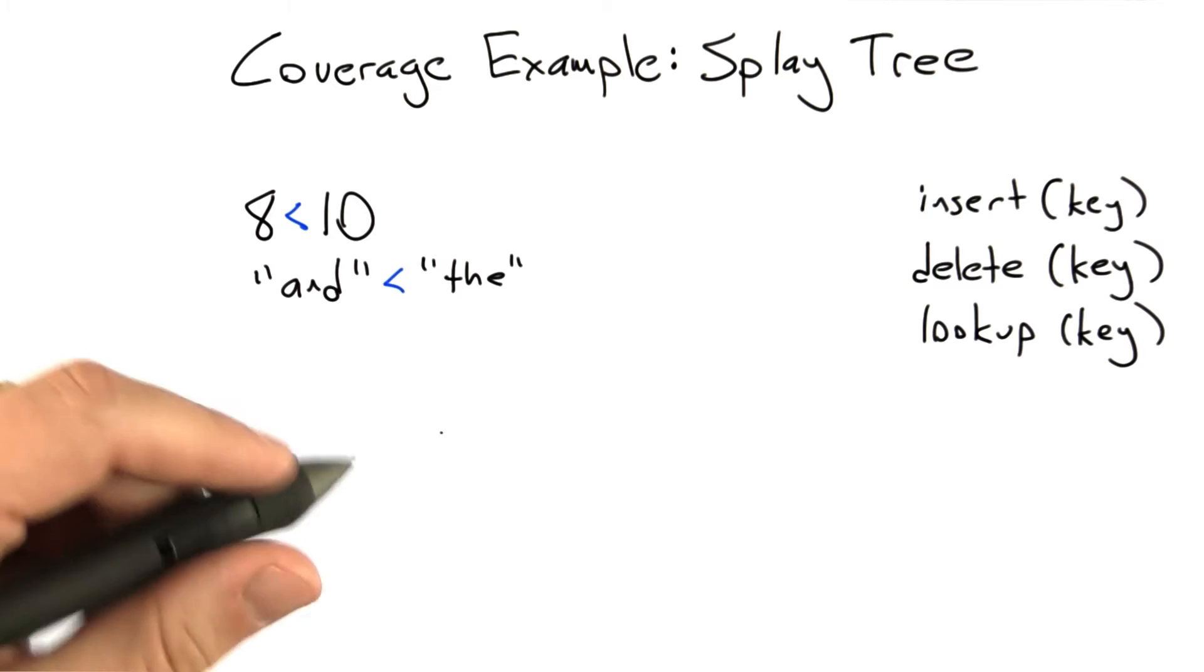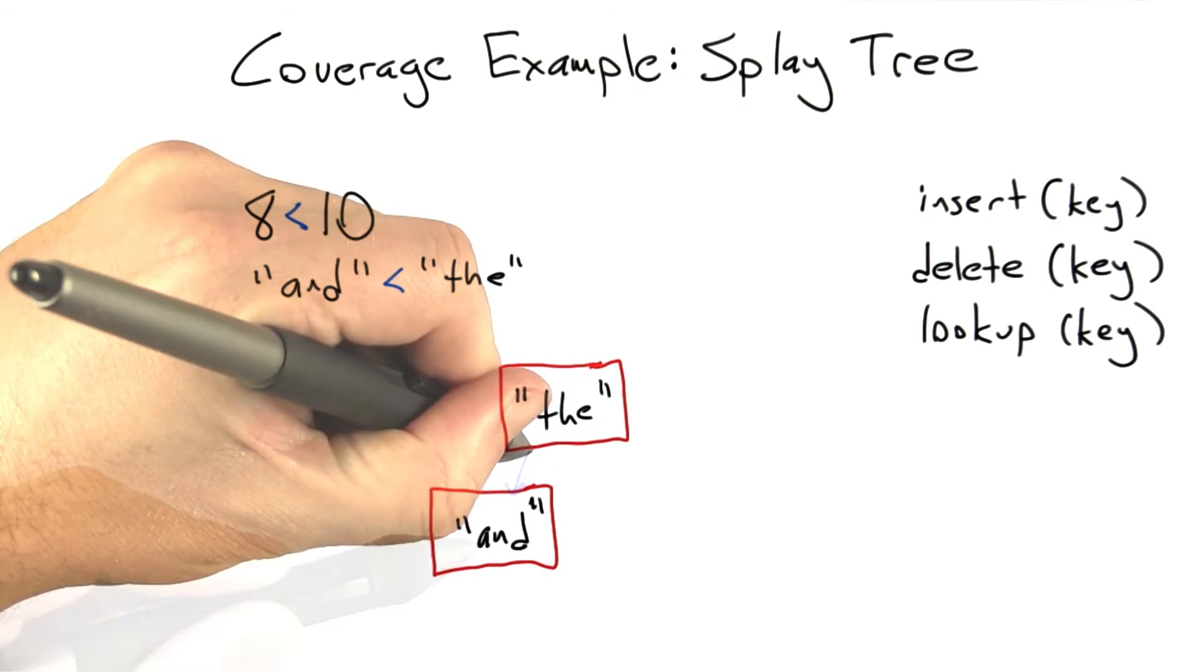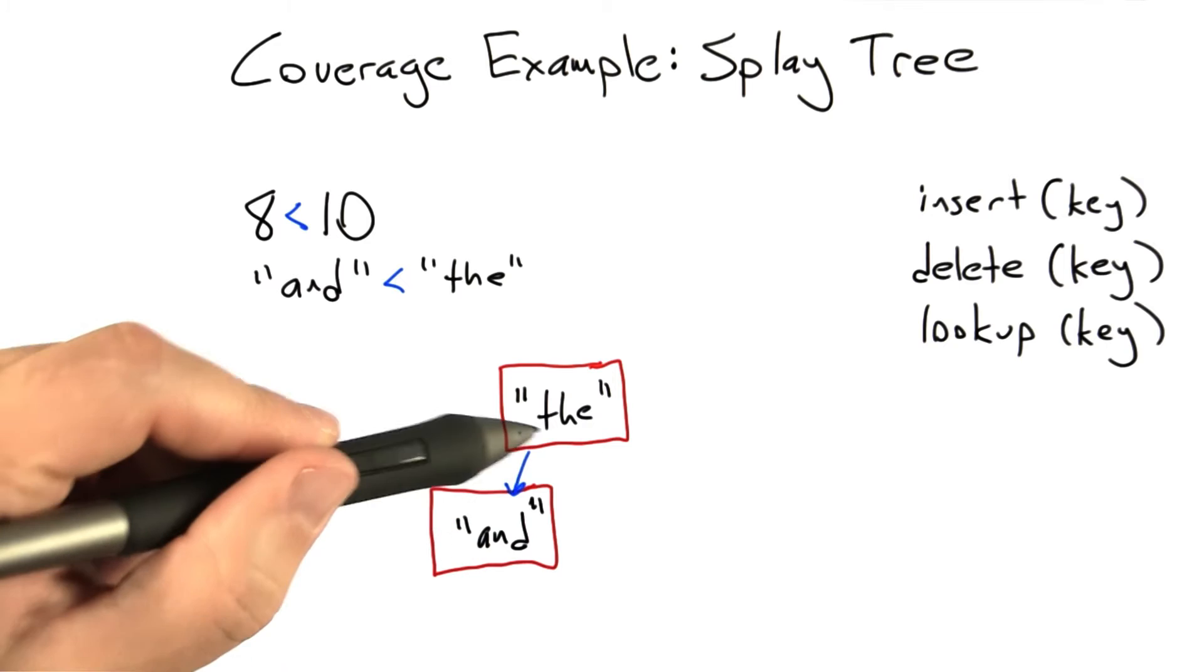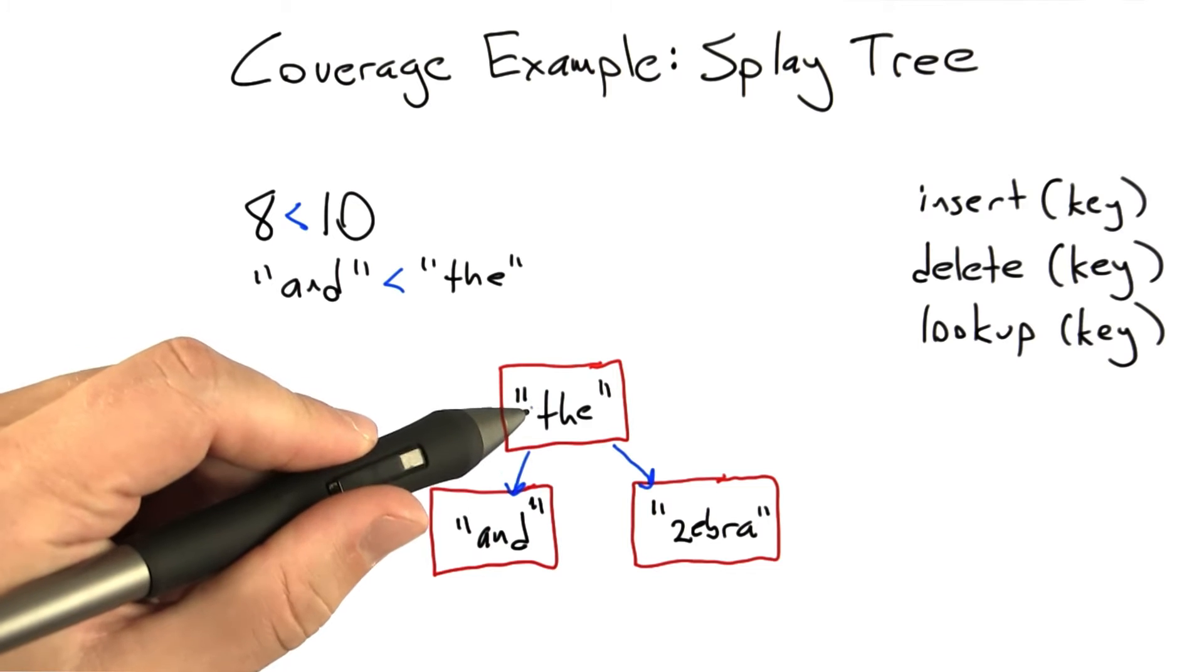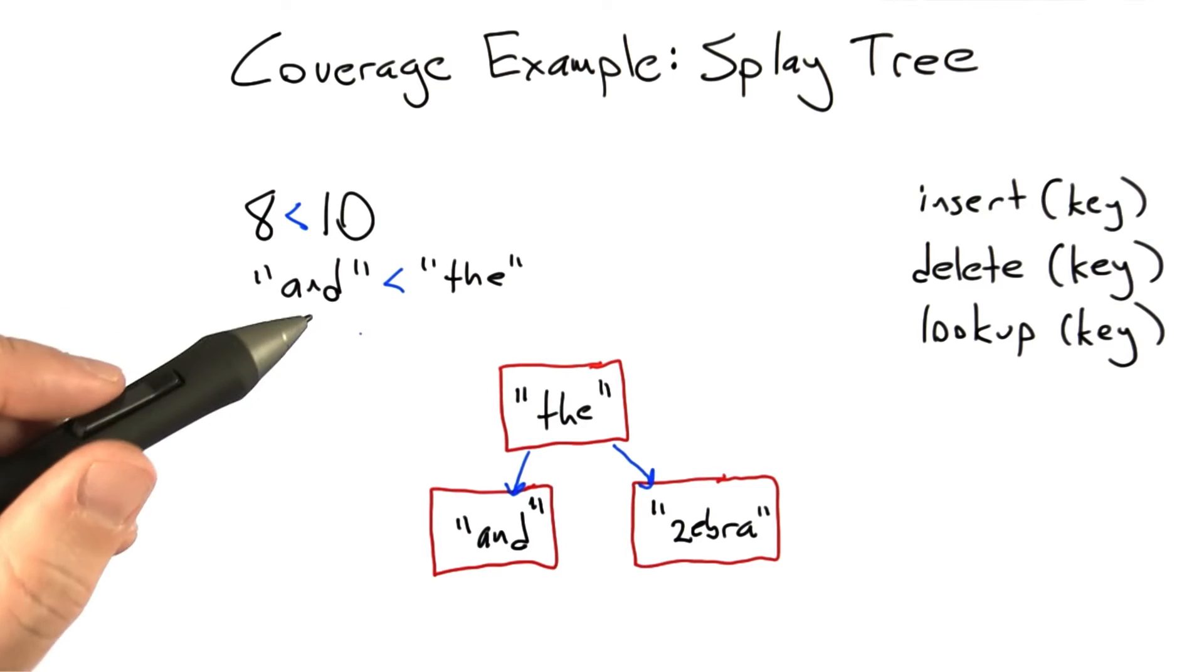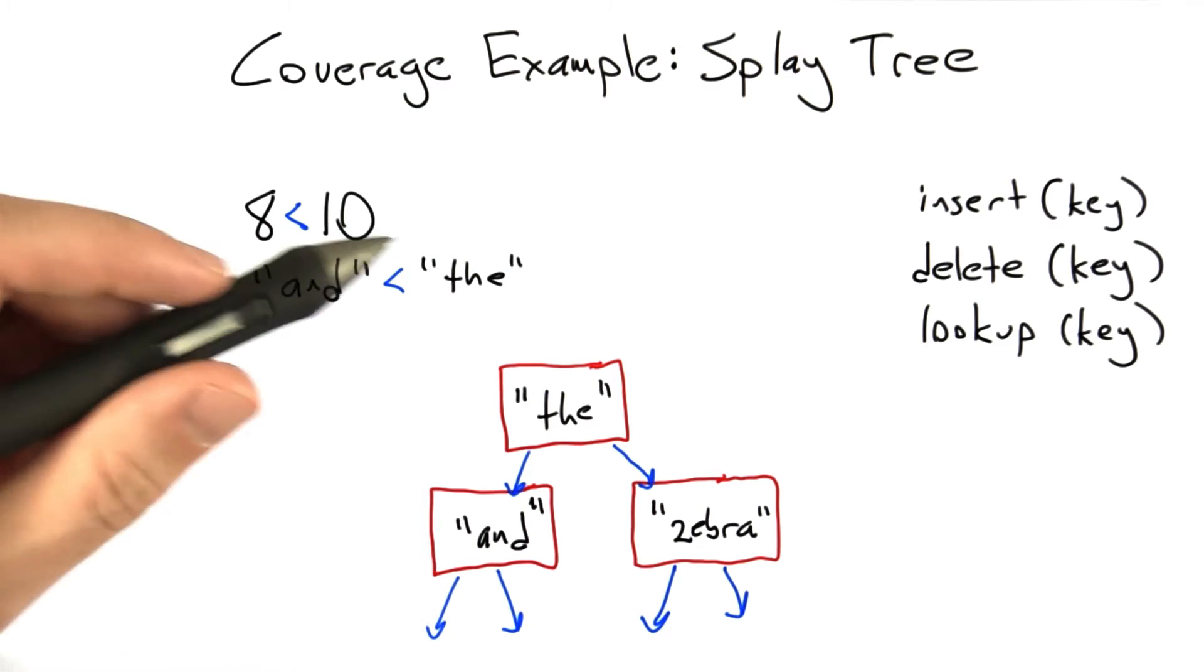The way the binary search tree is going to work is we're going to build up a tree under the invariant that the left child of any node always has a key that's ordered before the key of the parent node, and the right child is always ordered after the parent node using the ordering. And so hopefully what you can see now is that if we build up some sort of large tree with this kind of shape, we have a procedure for fast lookup.